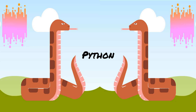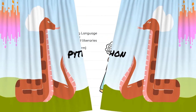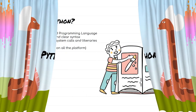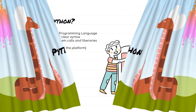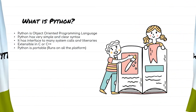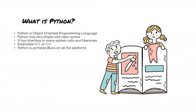In this course, we are going to be learning about Python. Now let's begin with answering some of the frequently asked questions about Python. So what is Python? Python is an object-oriented programming language which has very simple and clear syntax. It has an interface to many system calls and libraries and it is also extensible in C or C++.